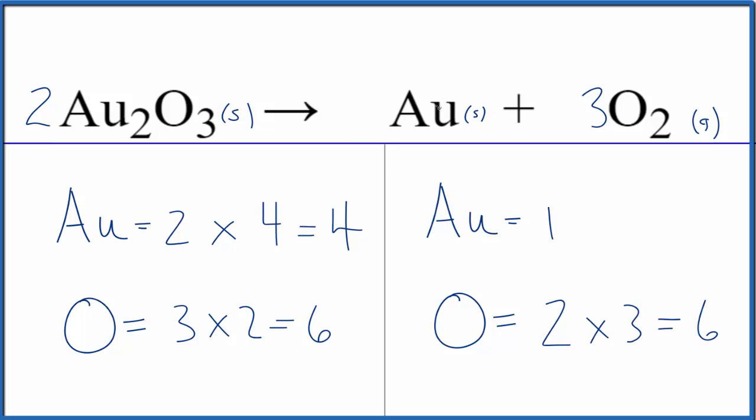Gold is all by itself. We need four of them. So if we just put a four here, one times four, that'll give us four.